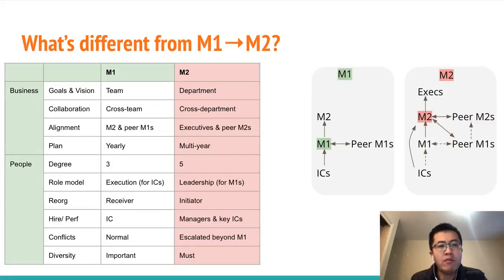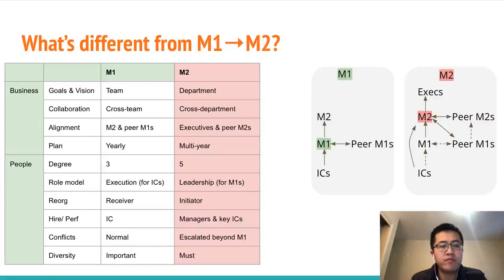An M1 needs to align plans and executions with her manager and her peer M1s, but an M2 needs to align strategies with her executives and other M2s. An M1 typically plans and thinks one year ahead at most, but an M2 needs to plan and think multiple years ahead.